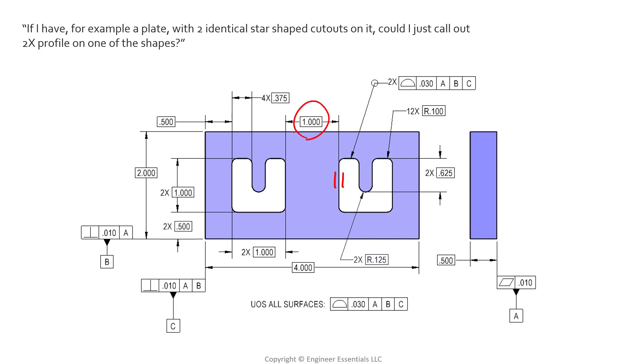And again, true profile is identified by all of these basic dimensions. So the drawing should have enough basic dimensions on it to define the true profile or the ideal location of all these profiles, and the tolerance will be equally distributed about that. So we'll have a tolerance zone that would look something like this, inside and outside away from true profile.